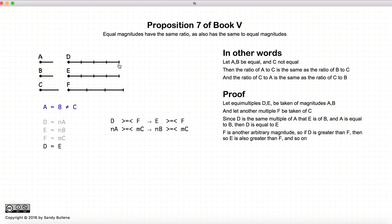So d is just a line, f is just some other line, d and e are equal. So if d is greater than f, then e will also be greater than f. If d is equal to f, e is equal to f, and so on and so forth. This is just because now we're dealing with magnitudes and not ratios.